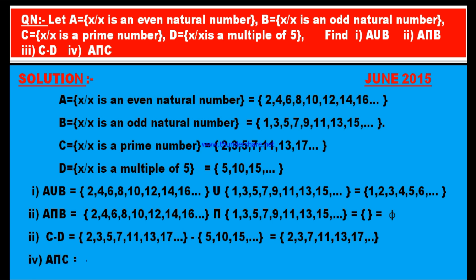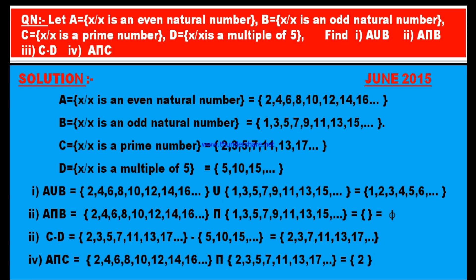The fourth part is A intersection C. A = {2, 4, 6, 8, 10, 12, 14, 16, ...} intersection C = {2, 3, 5, 7, 11, 13, 17, ...}. Intersection means list out the common elements. There is only one common element: 2. Therefore, A intersection C = {2}.